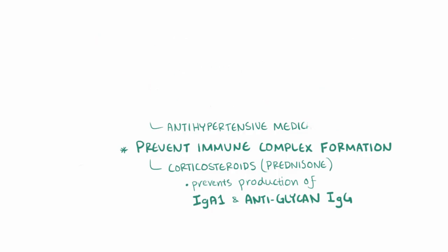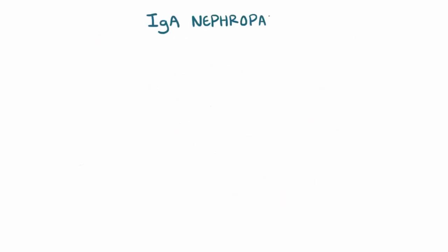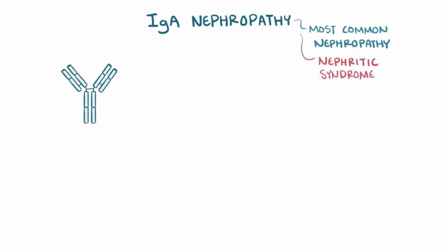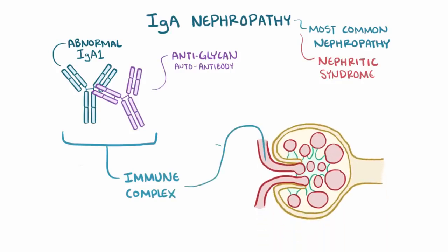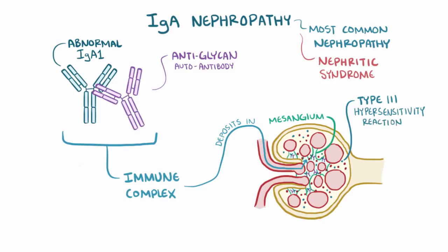As a quick recap: IgA nephropathy is the most common cause of nephropathy worldwide, and it's a type of nephritic syndrome in which abnormal IgA1 immunoglobulin is targeted by antiglycan autoantibodies, forming immune complexes that are deposited in the glomerular mesangium, which then start up a type III hypersensitivity reaction causing glomerular injury and hematuria.